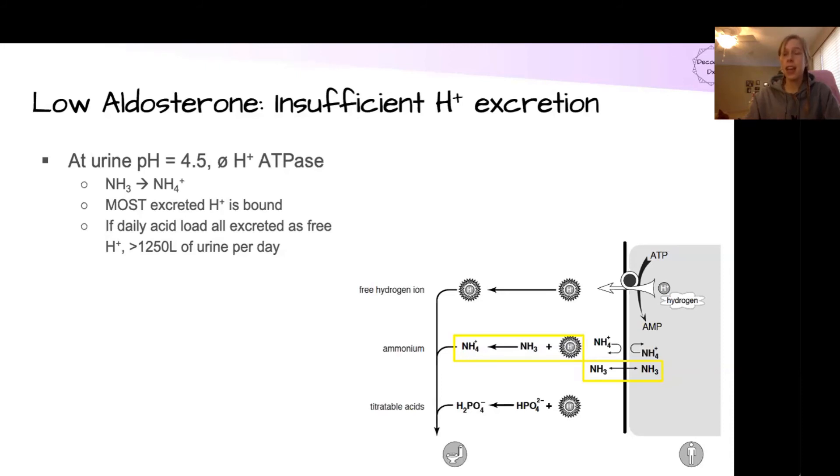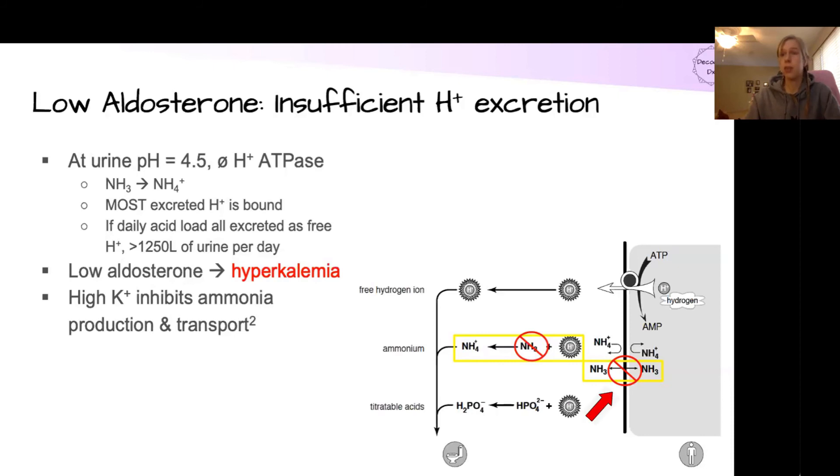Most of the acid that we excrete is bound, not free. In fact, if the daily acid load were all to be excreted as free hydrogen, we'd have to make over 250 liters of urine per day. And that simply comes down to the chemistry of the concentration gradients. So the ability to bind to ammonia and create ammonium is incredibly important to be able to excrete our acid. But in a low aldosterone state, we have hyperkalemia. That hyperkalemia directly inhibits ammonia production and transport. So it affects the enzymes that produce ammonia in the proximal convoluted tubule and it also affects the transport proteins that help it get into the lumen and distal tubule. The pathophysiology for the actual biochemistry of that is pretty complicated, but there have been studies that have shown that this is likely what's going on in this type of RTA. If we don't have enough ammonia that's either produced or able to get into the lumen, that means that we're not able to bind up extra of that hydrogen ion, meaning that we're not going to be able to excrete it simply because the hydrogen pumps cannot excrete extra free hydrogen if the concentration is already too high of free hydrogen in the lumen.